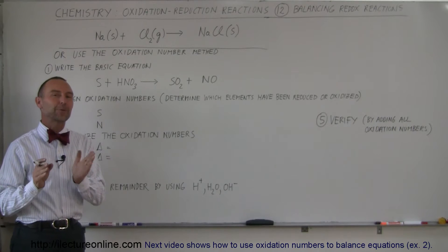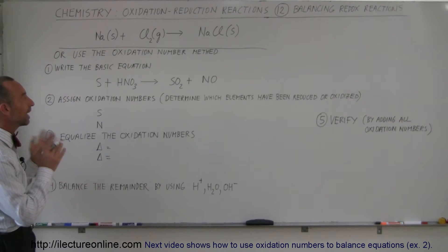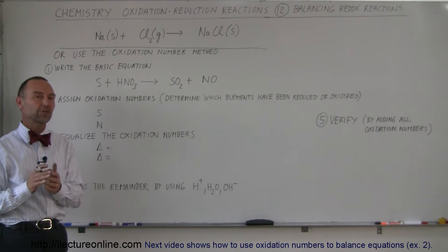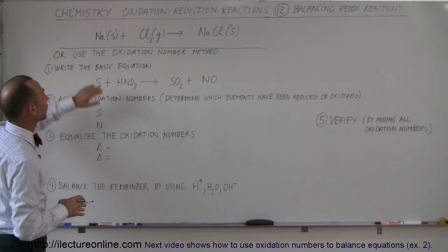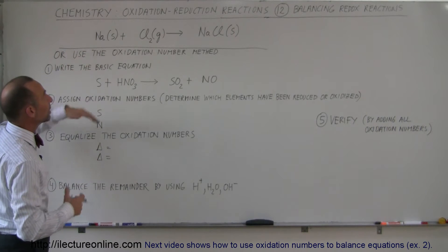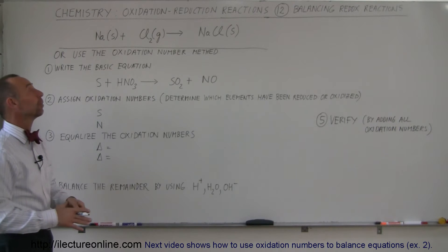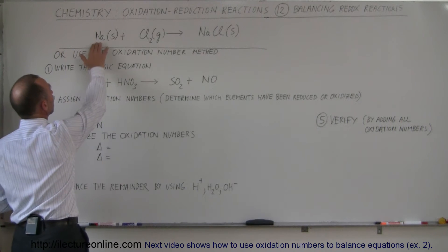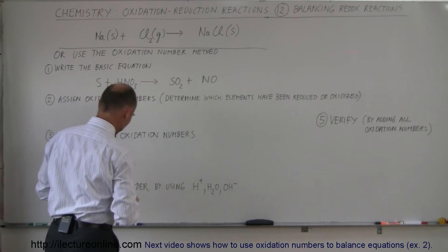Welcome to Electron Line. Now we're going to see how to use oxidation numbers to balance equations. Here I have an example of an equation that you can easily balance without using oxidation numbers. We have sodium mixing with chlorine gas to get sodium chloride.